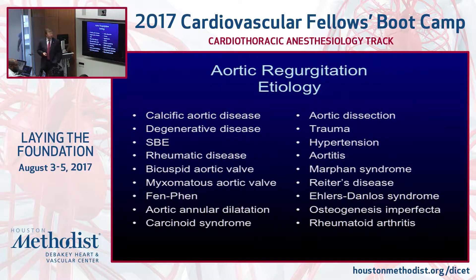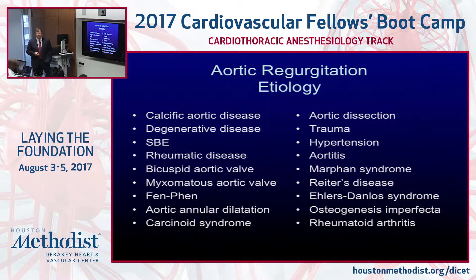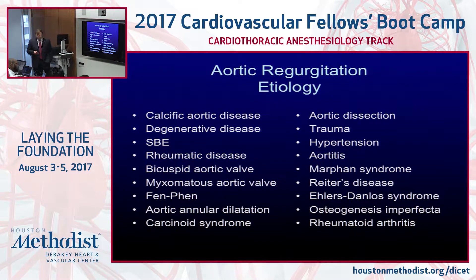The things we see most commonly are degenerative diseases and bicuspid valves. We don't see rheumatic heart disease here as much anymore, but we still see it quite a bit, mostly with immigration and with patients who had rheumatic fever 20 to 40 years ago and are now showing signs of rheumatic heart disease. All these other causes shown here are important contributors to aortic insufficiency.